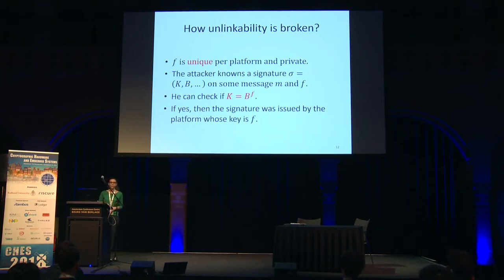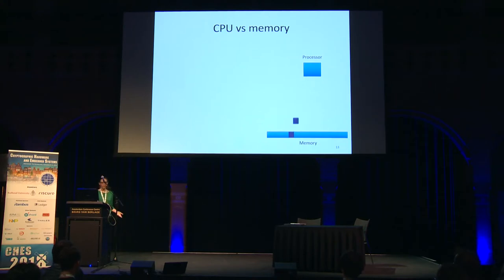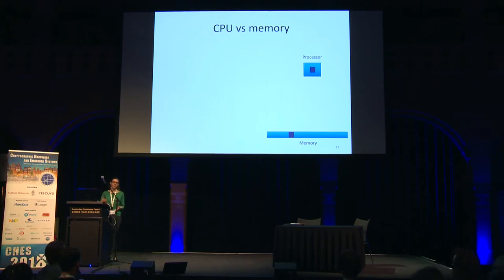Now for the side-channel step: we want information about the length of the nonce r. Here is background on cache attacks. There is a gap between processor speed and memory latency — each time a processor accesses data from main memory, it has to wait. To bridge this gap, processor designers introduced the cache: a small memory bank located between memory and the processor, running on faster technology.